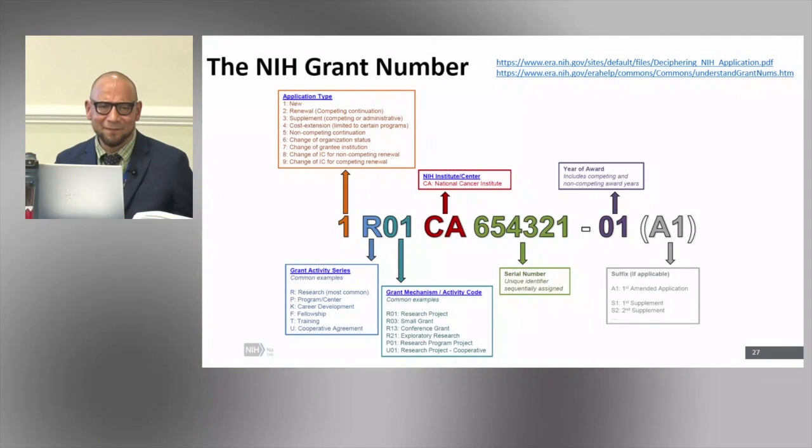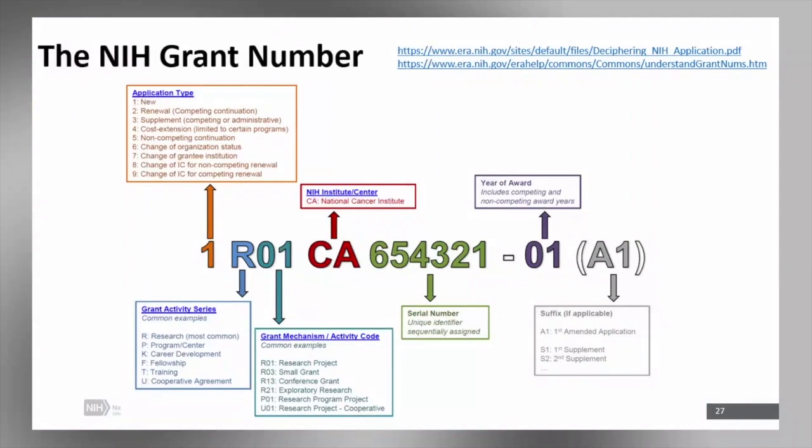Then we have some like, you know, type 4s, type 7s, change of institutions for various grant action circumstances. Then we have the activity code. So the three-digit number indicating the type of grant mechanism that you're applying for, the grant category. R's, research project. K's, career development. So even the first letter will tell you something. And the three-digit code will often have specific requirements. And in the case of the R01, parent and targeted solicitations.